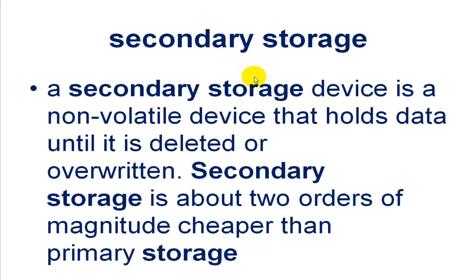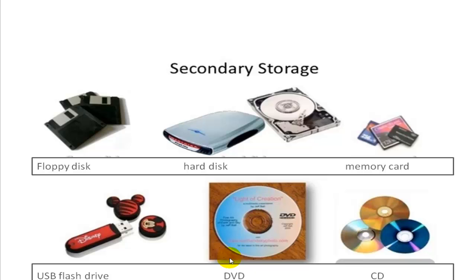Secondary storage: a secondary storage device is a non-volatile device that holds data until it is deleted or overwritten. Secondary storage is about two orders of magnitude cheaper than primary storage. One secondary storage device is the floppy disk — a flexible and removable small memory device used to store data.